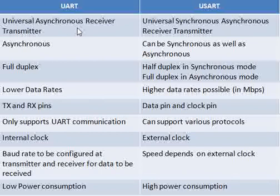We know UART is a low-speed serial communication interface used in every embedded design. It is used for low data rates, like in the kbps range. Whereas with USART, as it has an external clock, we can use it for higher data rates as well.